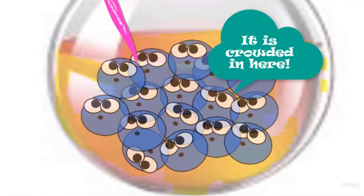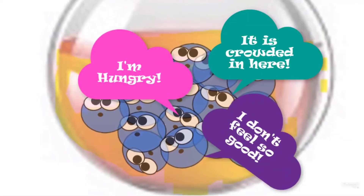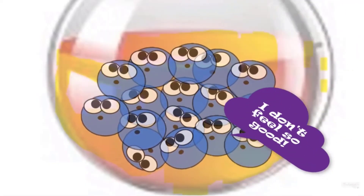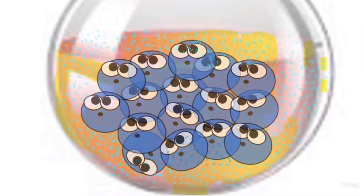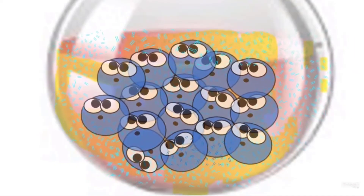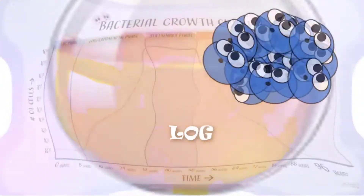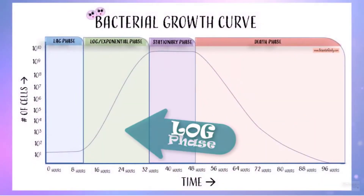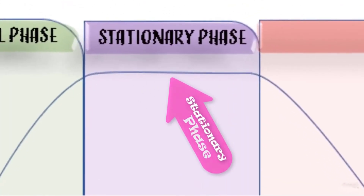This leveling off is due to the population of bacteria beginning to run out of space and available nutrients. Also, the cells will experience a continued buildup of toxins. Due to these factors, the log or exponential phase will give way to the stationary phase.